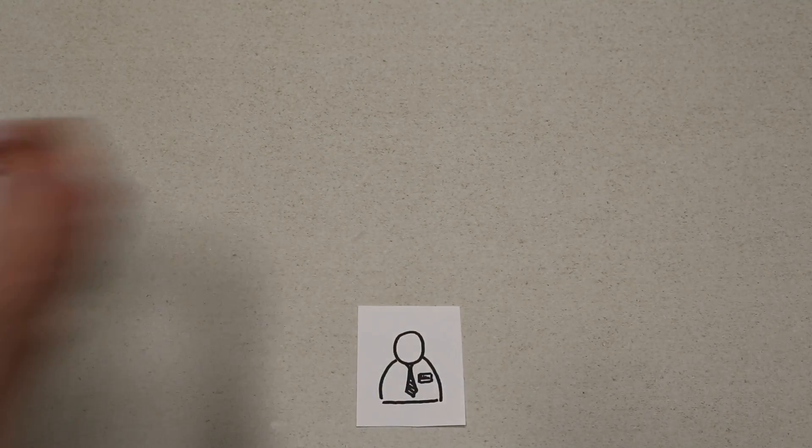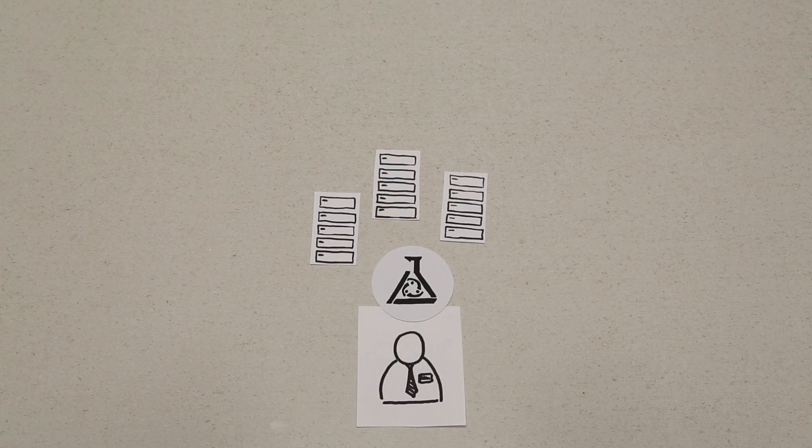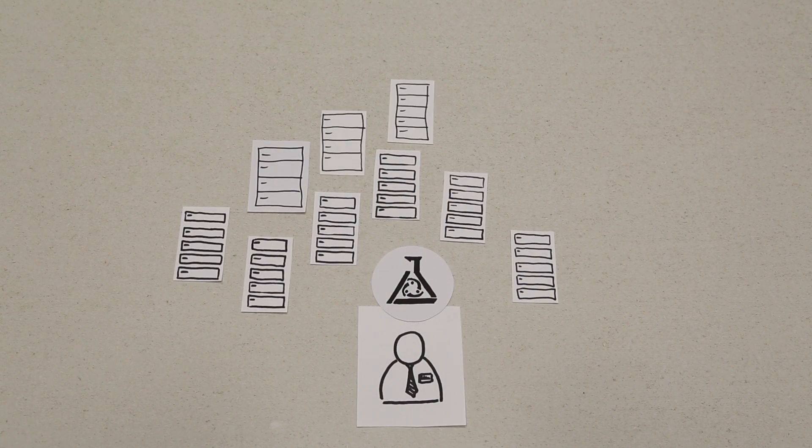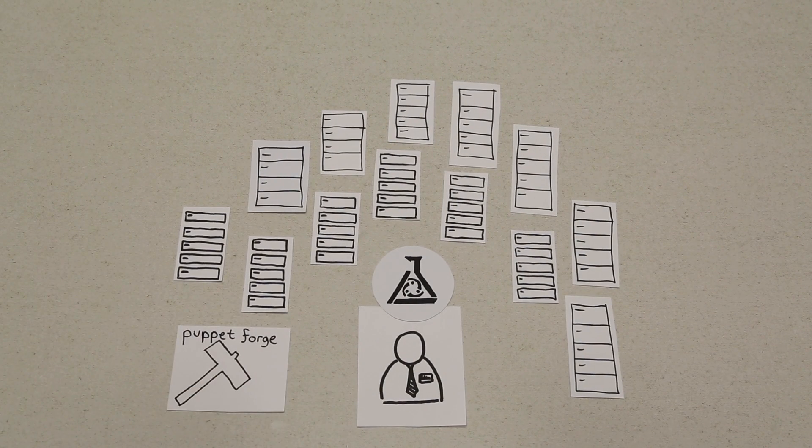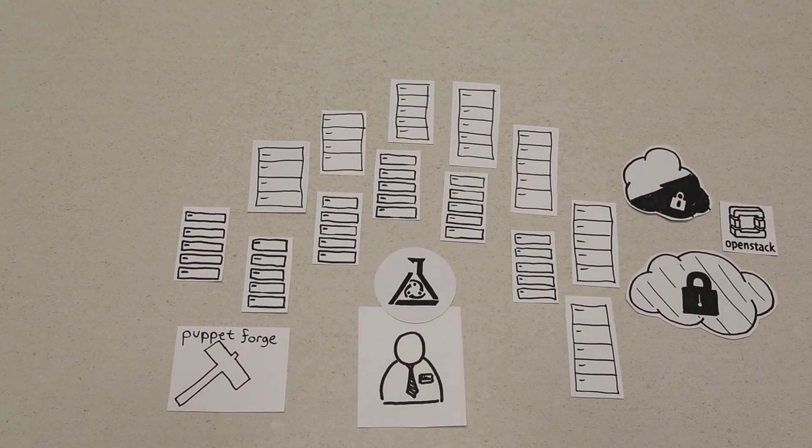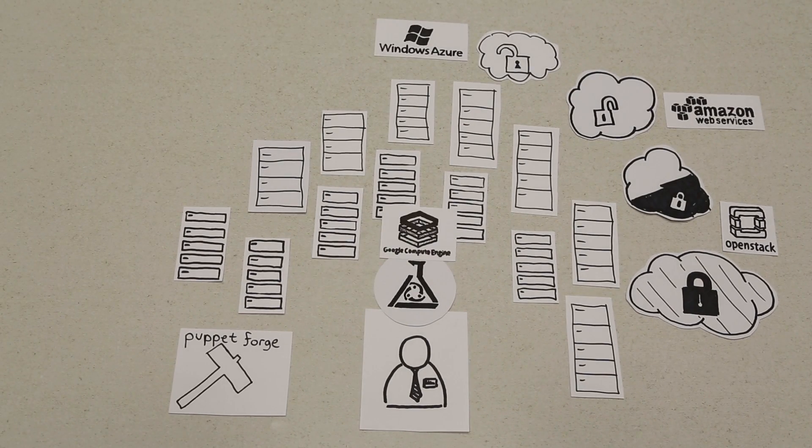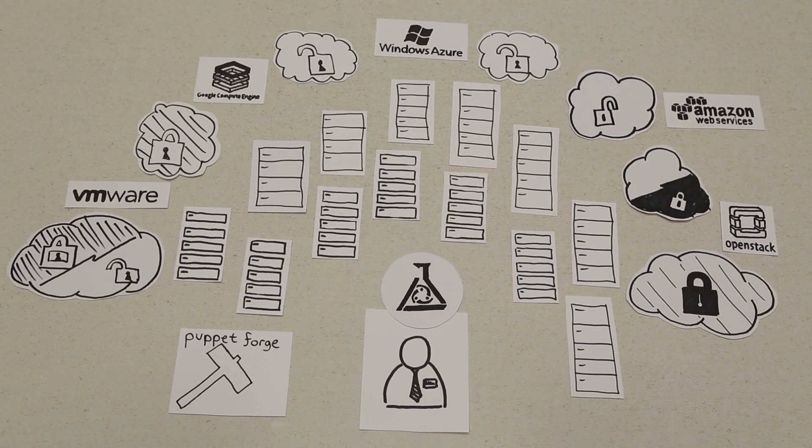By automating away his routine tasks, Joe now spends less time firefighting and can spend more time learning and building. Joe can also get up and running with new technologies a lot faster by using one of over a thousand shared configurations from the Puppet Forge.